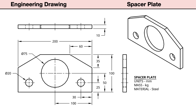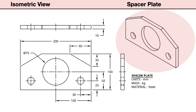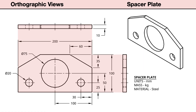This drawing contains two standard views to fully describe the shape and the size of this mechanical part. First, the isometric view shows a pictorial — this helps us visualize the part in three dimensions. Next, the orthographic drawings are shown as flat 2D drawings, representing each of the three principal views shown here in third angle projection.